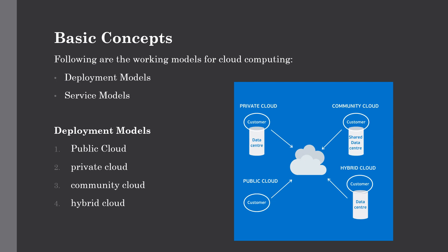The first model is the deployment model. Deployment models define the type of access to the cloud — that is, how the cloud is located all over the world. There are four types of access: public cloud, private cloud, community cloud, and hybrid cloud.